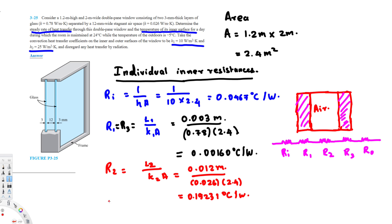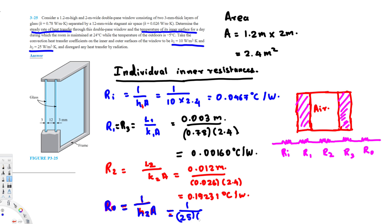R_outdoor is a convection resistance, calculated as 1 over h2 times A. The outdoor heat transfer coefficient is 25 watts per meter squared Kelvin, so R_outdoor equals 1 over (25 times 2.4), which gives 0.01667 degrees Celsius per watt.